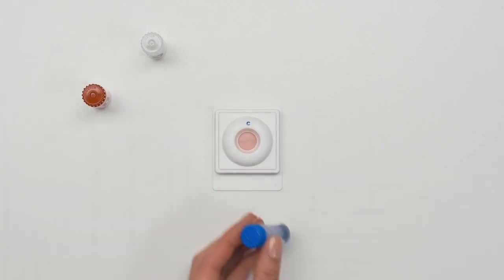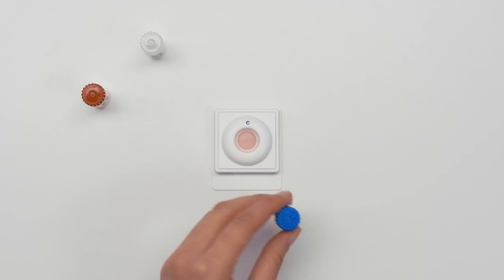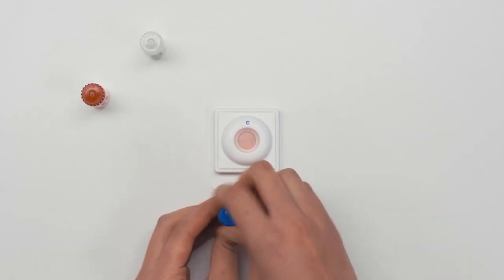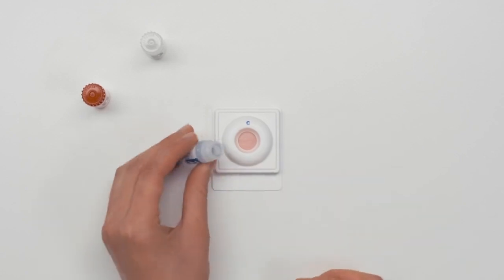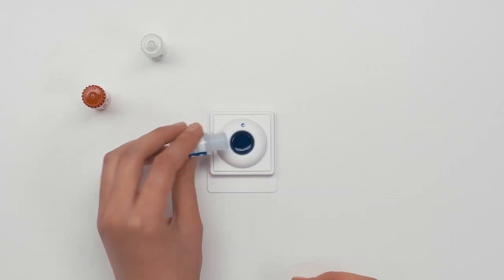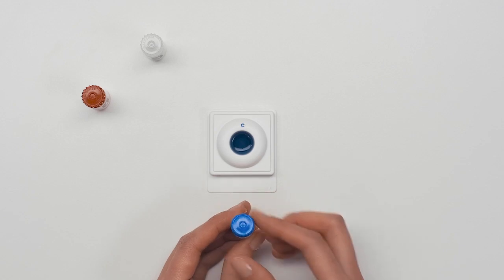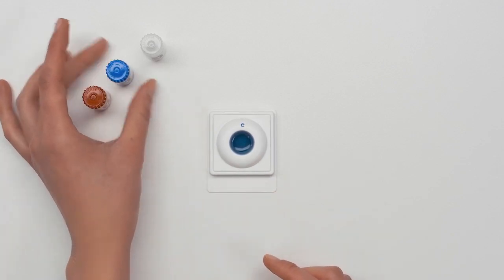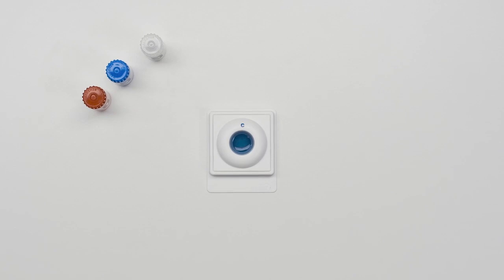Bottle 2: Shake bottle 4 times and pour all of the liquid into the test device. You may need to gently tap bottle 2 to get the liquid out. Wait until the liquid disappears.